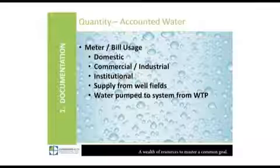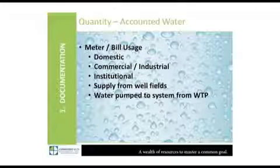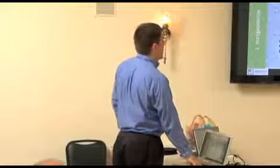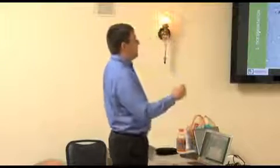One of the most important things you can do is metering, and this goes for wastewater also. You need to meter every source so you can document where it's all coming from. Meter from your supply, from your well fields, and the water pumped to the system from the water treatment plant. You need to meter and bill usage — domestic, industrial, institutional, commercial — because you've got to make money one way or another, and communities have to find money everywhere they can.